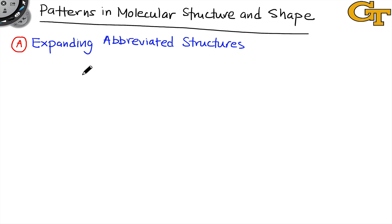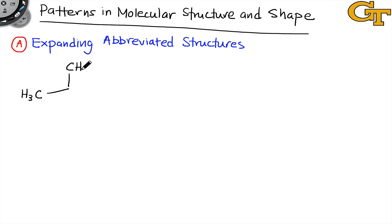Typically in an introductory chemistry course, drawing Lewis structures focuses on being given a chemical formula and drawing the structure from that. I'm actually not a big fan of this kind of problem because it's not a very well-formed and well-understood type of problem. It's not easy for an introductory student to get a handle on it, and in fact it isn't what expert chemists do, which is the main thing that frustrates me about it.